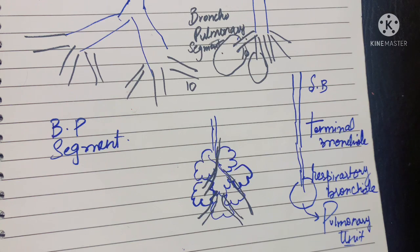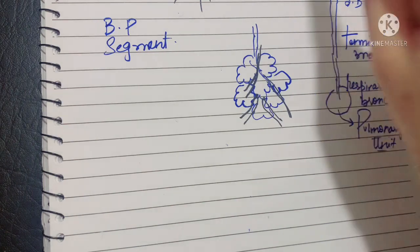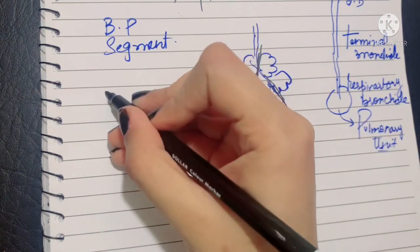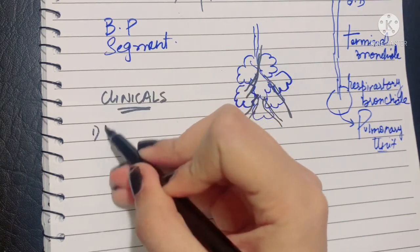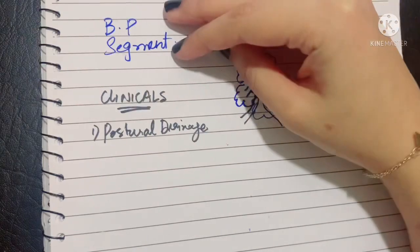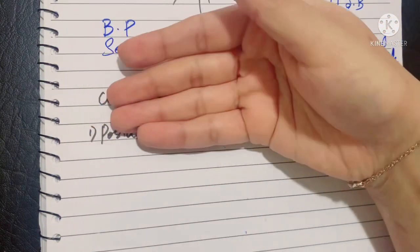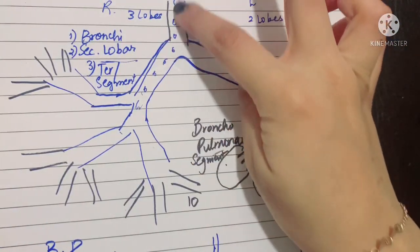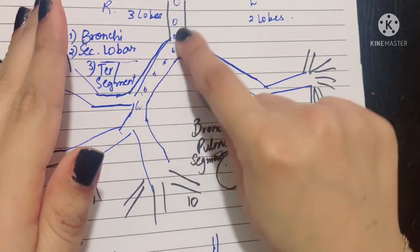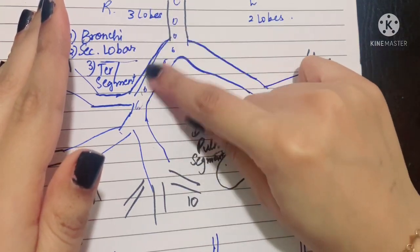The bronchopulmonary segments are of surgical importance, allowing a surgeon to isolate particular segments during lung disease operations. Now let's talk about a couple of clinical correlations. The first is postural drainage: whenever there is excessive secretion in the lung, the patient is advised to lie on their right side, because the right bronchus is more in line with the trachea, so gravity helps all secretions drain into the trachea easily to be coughed out.